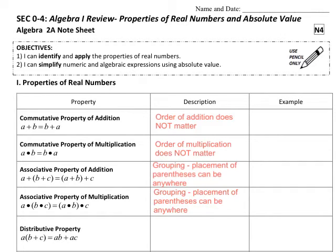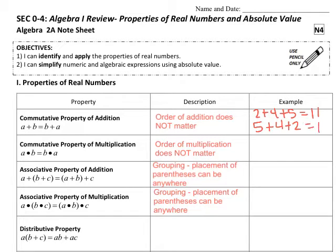An example of the commutative property of addition would be where numbers can be added in any order. So for example, we could have the numbers 2, 4, and 5 added together in any order. The order is not specific, but the result comes out the same.